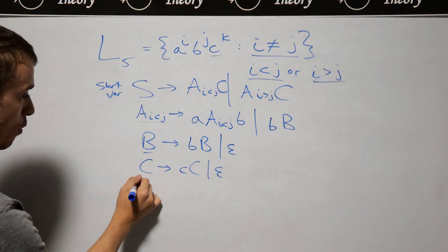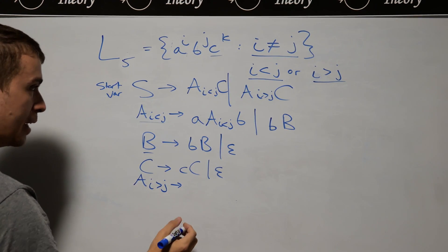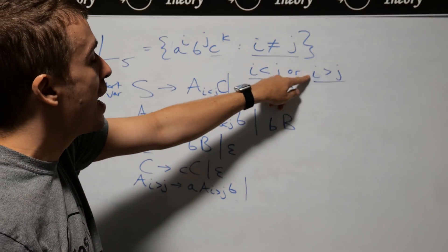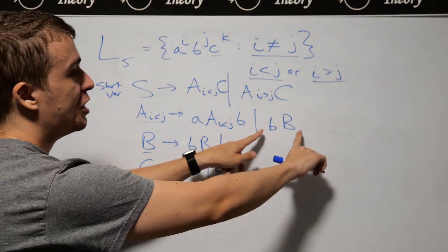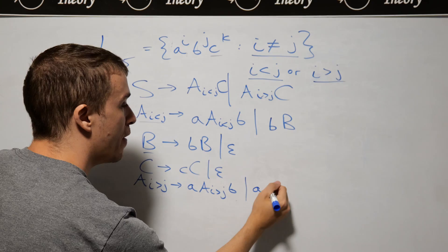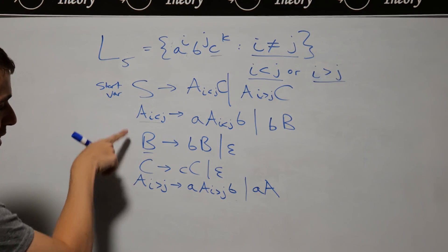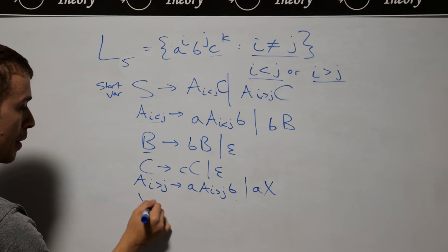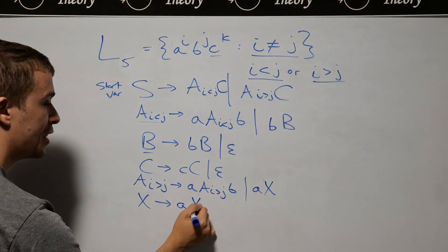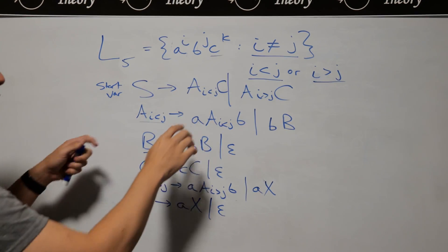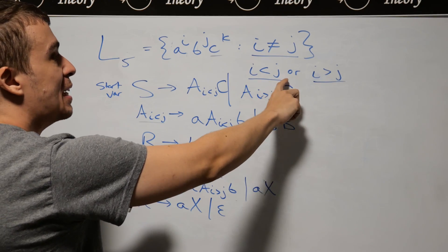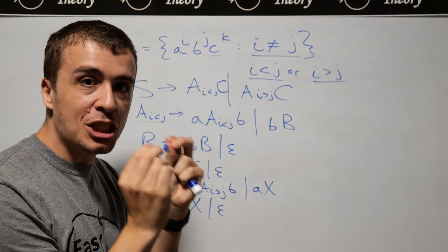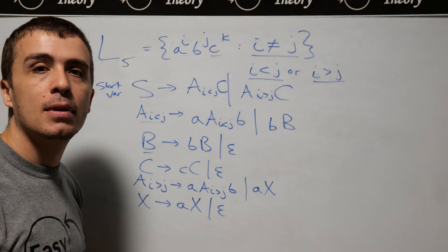For the i > j case, it's a very similar idea. The rule A_{i>j} goes to A A_{i>j} B generates equal A's and B's. Then we need a variable — let's call it X — to spout off additional A's. A_{i>j} goes to X to guarantee at least one more A, and X goes to A X or epsilon to generate more A's as needed. So by dealing with both cases independently — i < j and i > j — we can generate all strings where the number of A's and B's are not the same.